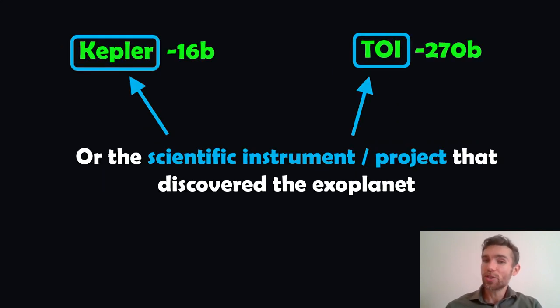Or if it's not any of those, it could be the scientific instrument or the project that was used to discover the exoplanet. Kepler is the Kepler Space Telescope. TOI is a TESS object of interest from the TESS telescope. It's either the name of the star or the name of the telescope or instrument that discovered it. That's the first part of the name that a planet will get.